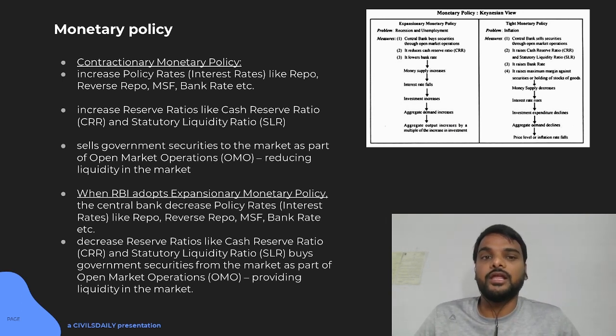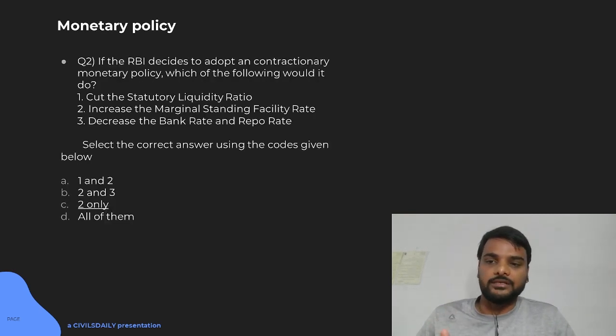That will take money out of the economic system - raising the repo rate, reverse repo rate, MSF and bank rates. Again, you will increase the CRR and SLR. If inflation is going too much, then you will also involve in the open market operation reducing liquidity in the market. So, your answer here will be two only.